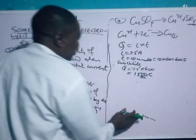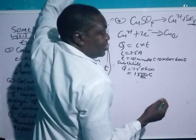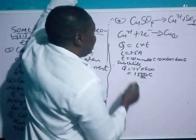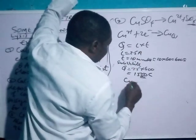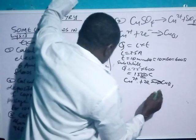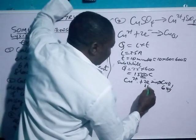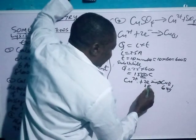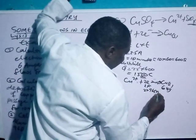Now we use the equation method, which can solve more questions than the formula method. From the equation Cu²⁺ + 2e⁻ → Cu(solid): copper has an atomic mass of 64 grams, and 2 electrons correspond to 2 Faradays. Since 1 Faraday is 96,500 Coulombs, 2 Faradays equals 2 × 96,500 Coulombs.